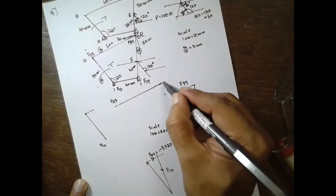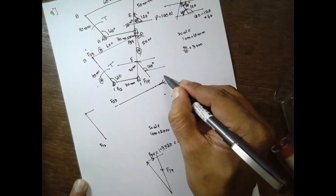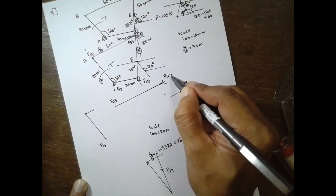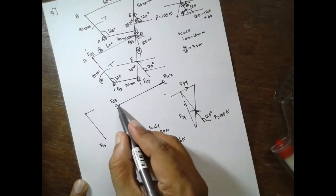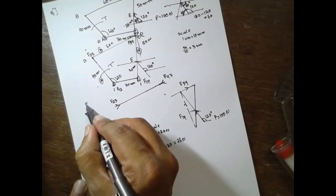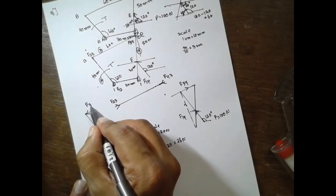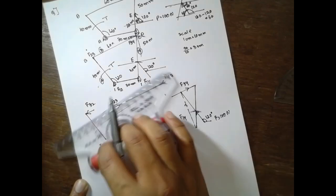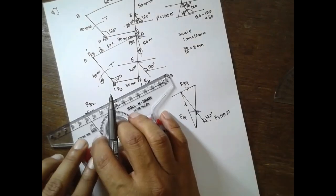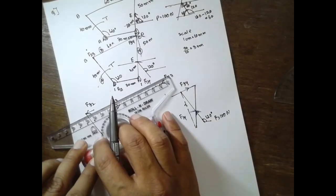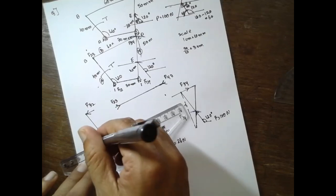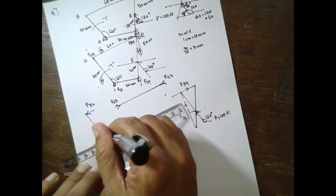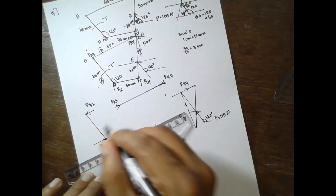3-4 is in this way. The opposite direction will be in this way — F43. In order to balance this one, the next arrow will be here. In order to balance, the next arrow will be in the opposite direction. The reaction will be of 32. Just draw a line parallel to this one but in opposite direction — the arrow should be in opposite direction.